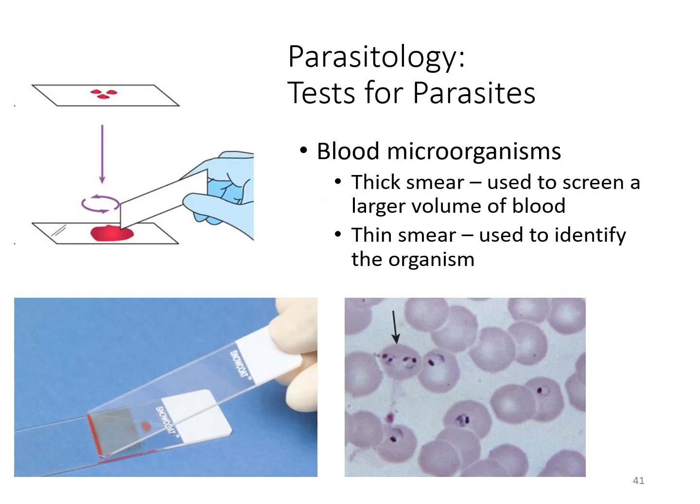For intestinal ova and parasites, you look for parasites or eggs of the parasite in the feces. You examine the stool macroscopically to see if there are any visible worms, and then microscopically depending on the organism. When making a blood smear, you make a thick smear to screen a larger volume of blood and a thin smear by pushing a drop of blood out to create a thinner pattern — similar to hematology slides. Here you can see an example of a malaria parasite within a blood sample.